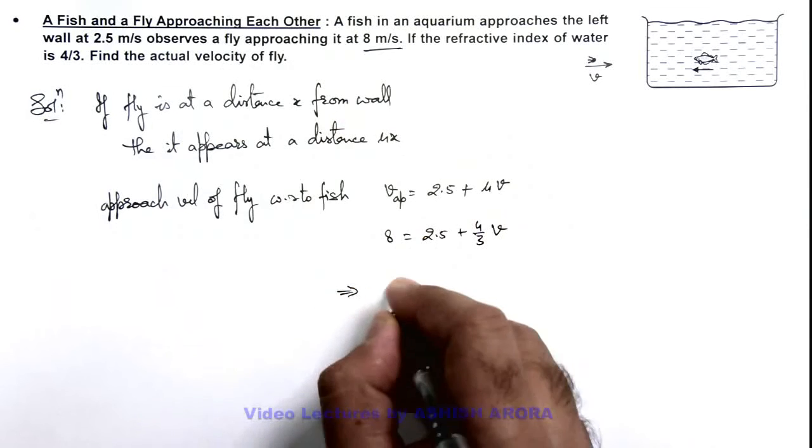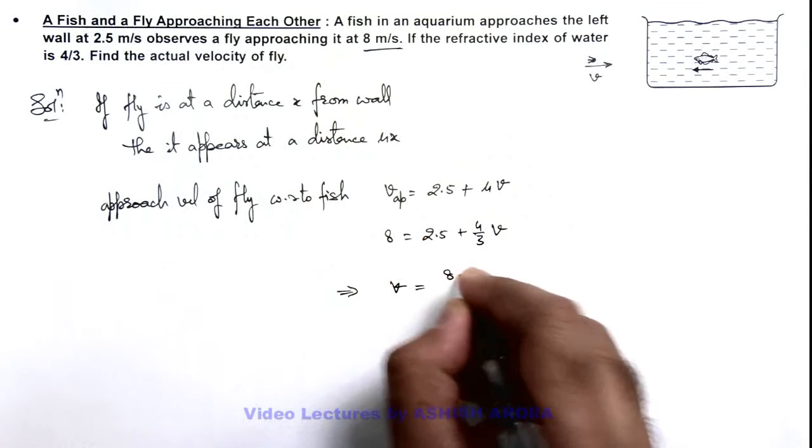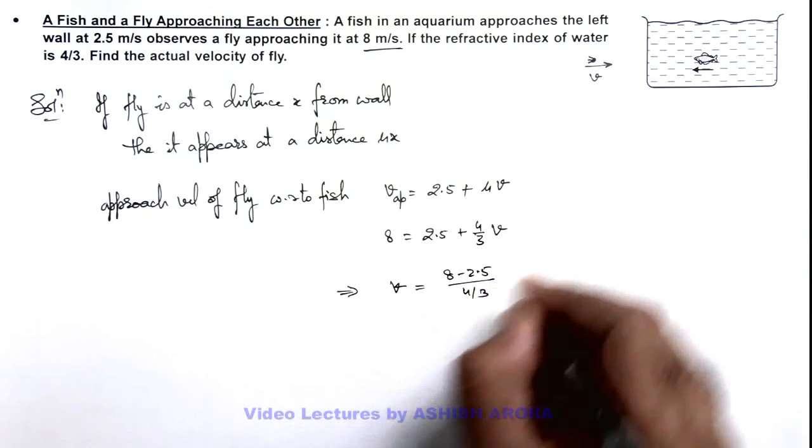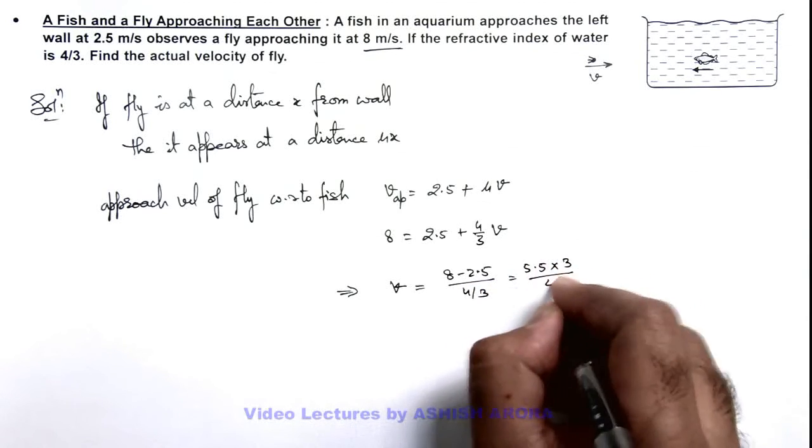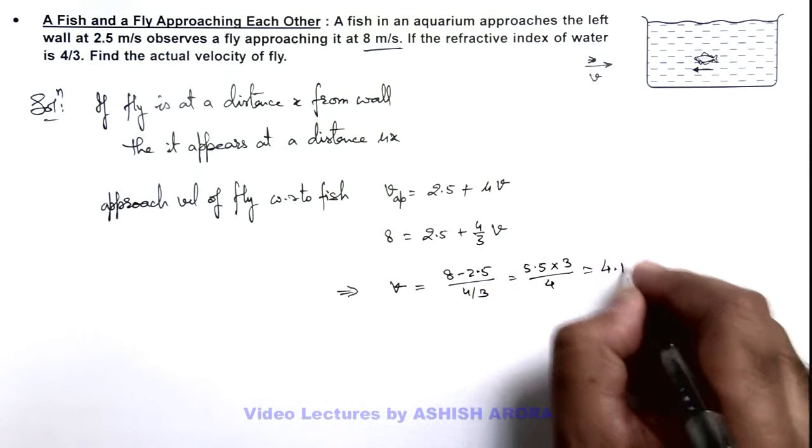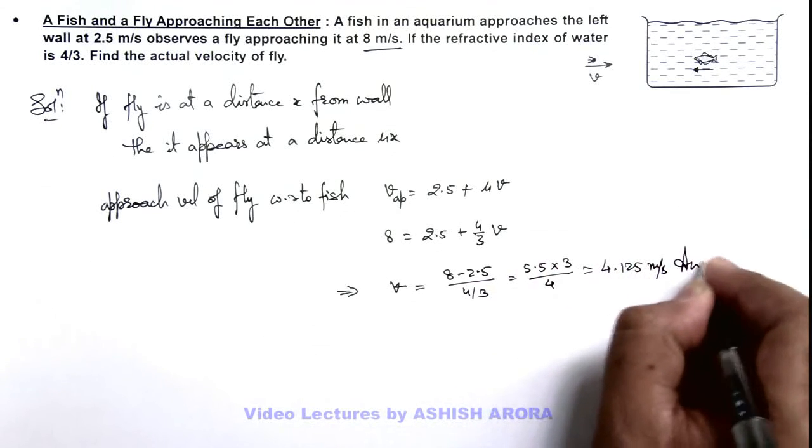On simplifying we get the value of v is equal to 8 minus 2.5 by 4 by 3, which is 5.5 multiplied by 3 by 4 that is 4.125 meters per second. That is the answer to this problem.